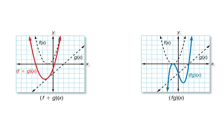When we added the two functions — f(x) was a parabola (x squared shifted over 1) and g(x) was the line x minus 2 — the result was still a parabola. Our final answer when we added them was x squared + 3x − 1, which still has an x squared, so it's still a quadratic — a parabola.